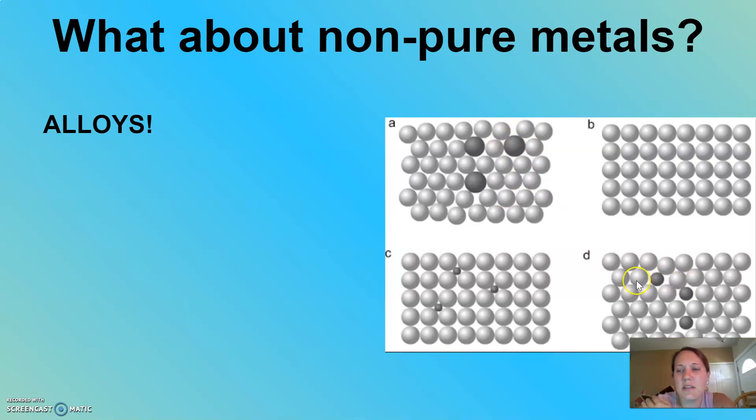You can see in substance D, again, we've got a light gray and a dark gray, two different types of metals. The dark gray in this case is smaller than the lighter gray.